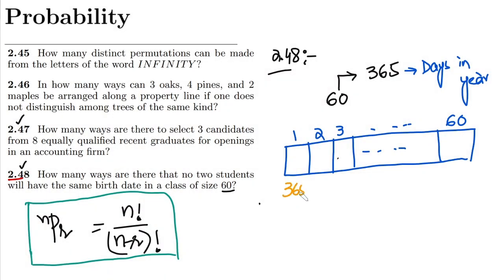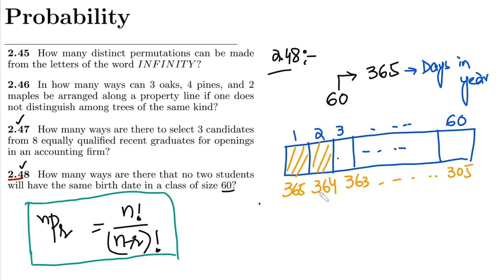Following the same procedure: here I will have 365 options, then one has been occupied so here I will have 364, then 363, and so on. When all 60 slots are filled, the last slot will have 305 options. At the end we multiply them all together — that would be the solution.